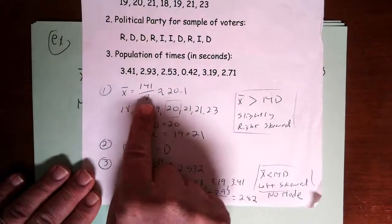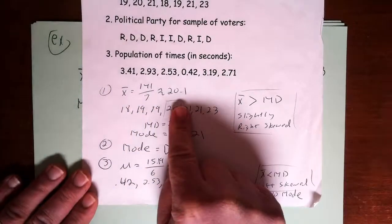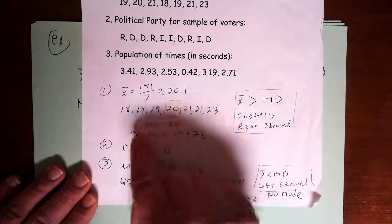you're adding up the age of the college students, dividing by 7, and when you use the rounding rule, you get 20.1. And so that's the average age.